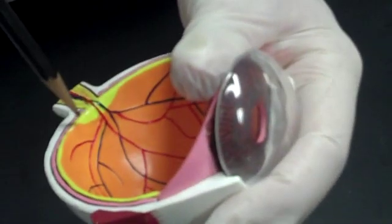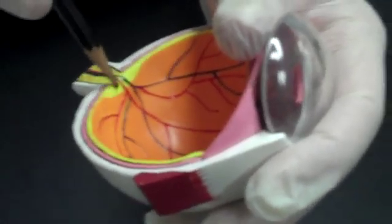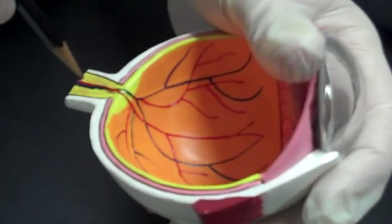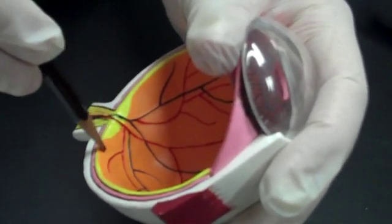We'll move to the optic disc. We'll use this model for the optic disc. Optic disc is here. It's a blind spot. It's where there's no photoreceptors. It's where the nerves, arteries, and veins all exit the back of the eye. So we can see about half of the optic disc here.